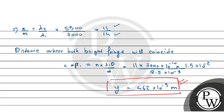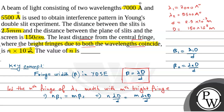So the least distance from the central fringe where the bright fringes due to both wavelengths coincide is n × 10⁻⁵ meters, where n equals 462. This is our final answer. Hope you understand it. Best of luck.